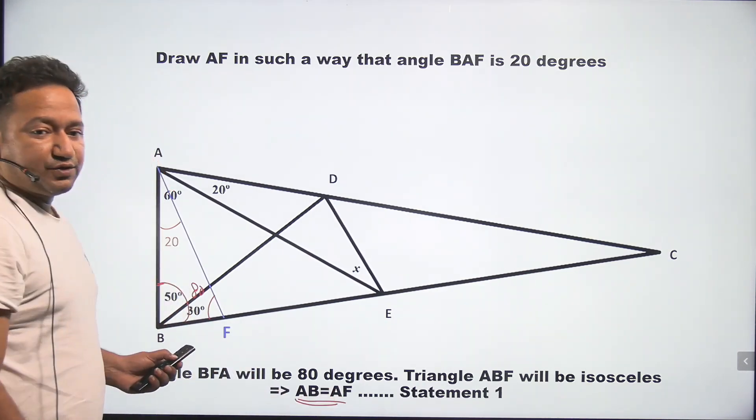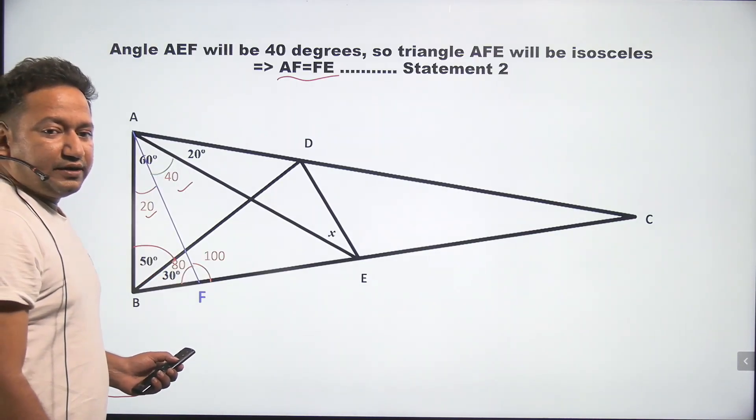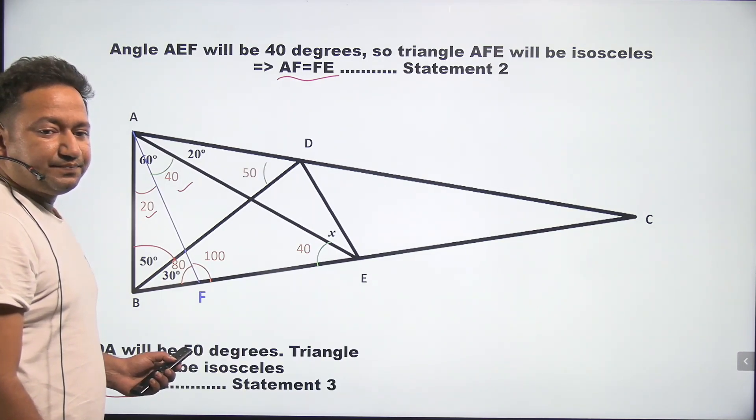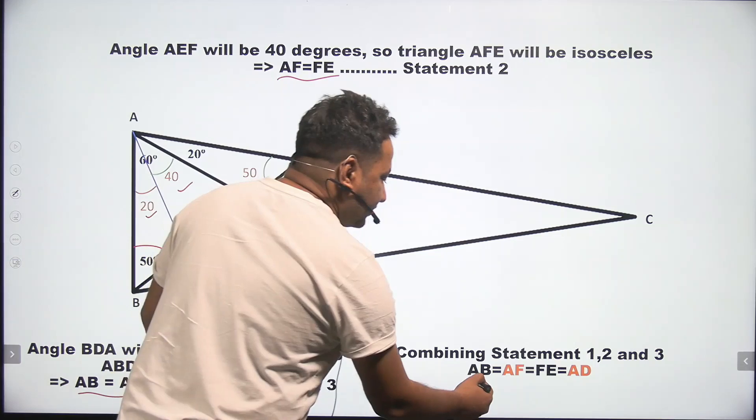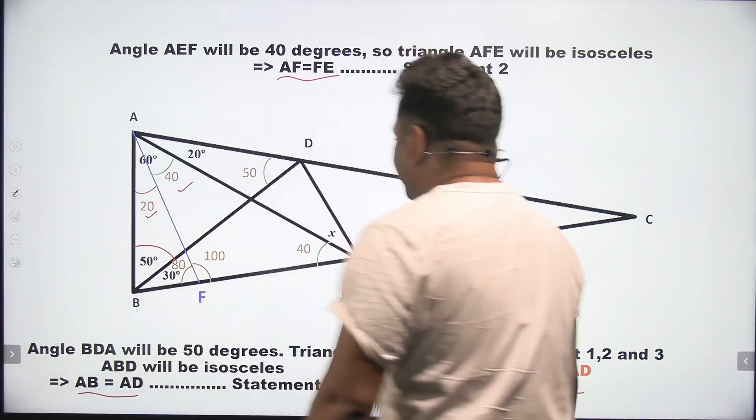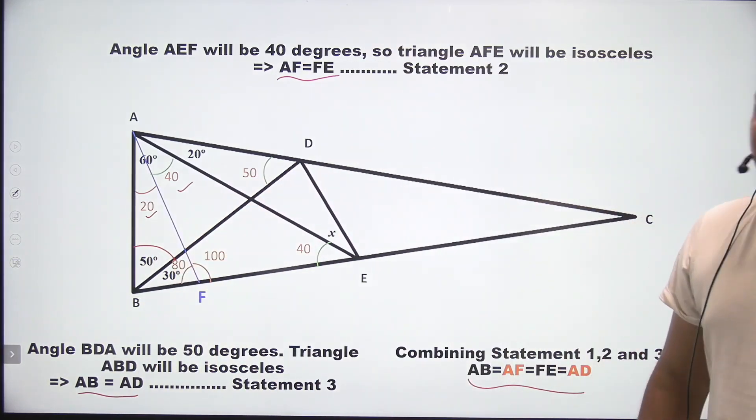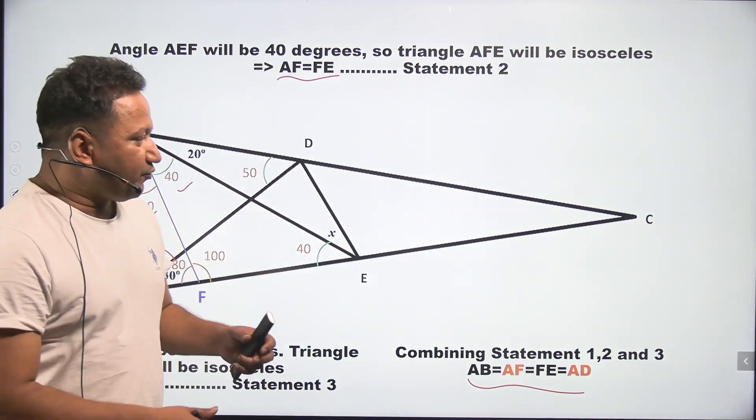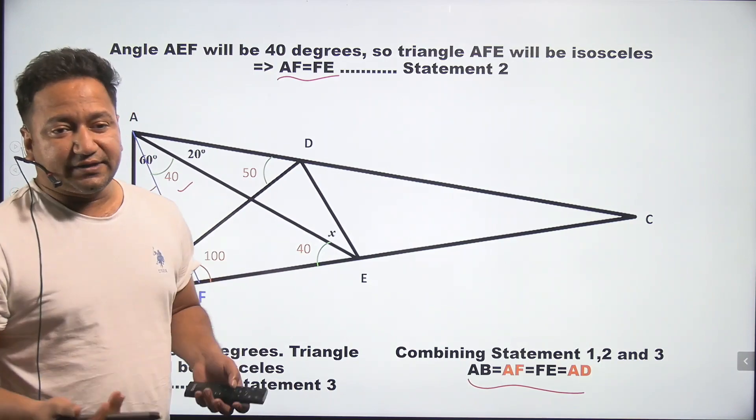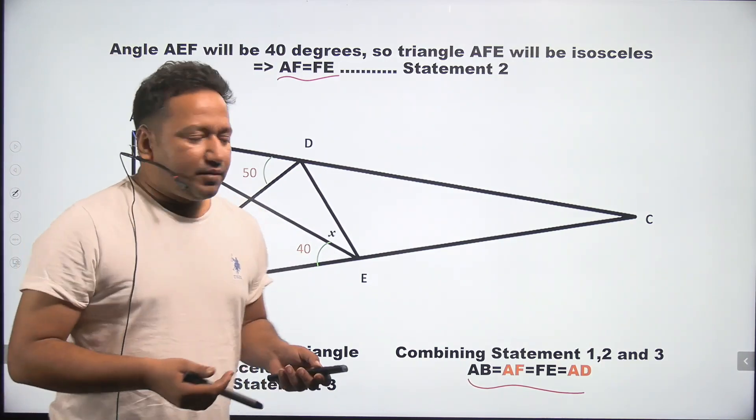So if I combine all these statements, I get AB is equal to AF is equal to FE is equal to AD. So as you can see that we are not using some big theorems, but at the same time, we are doing a lot of constructions and a lot of things have to be kept in mind.